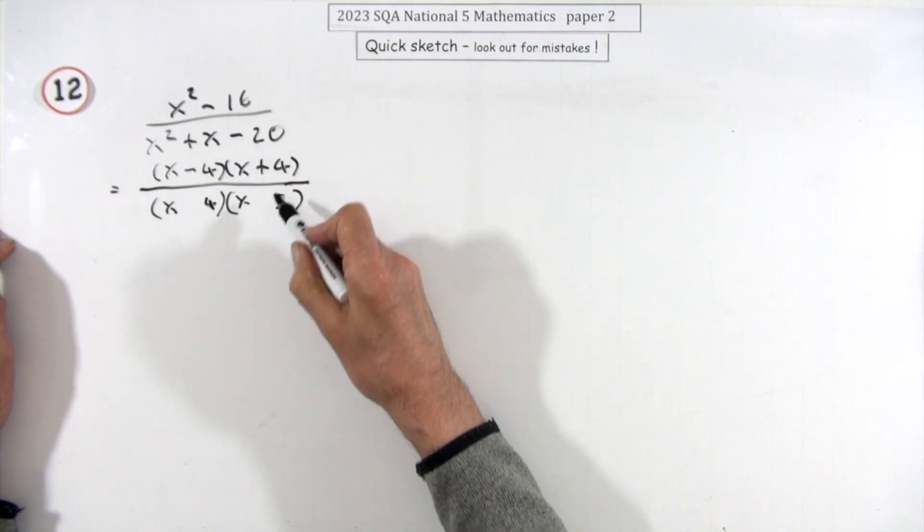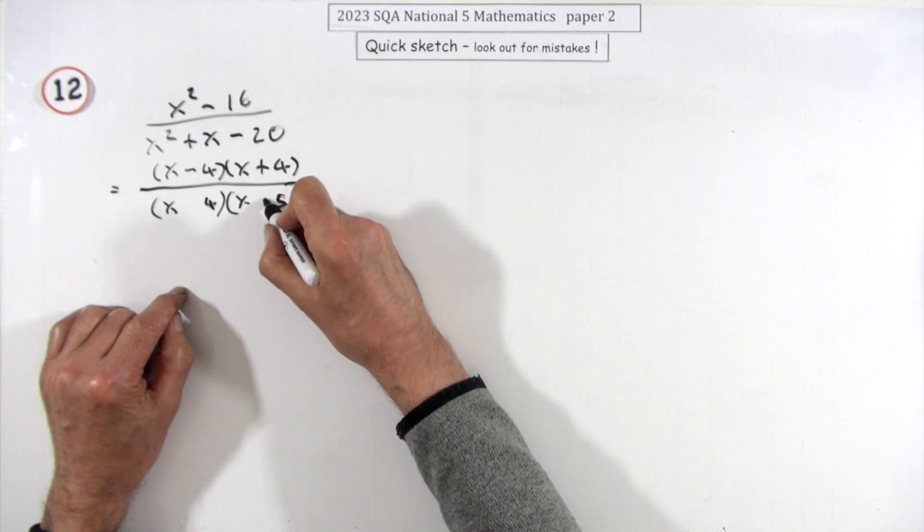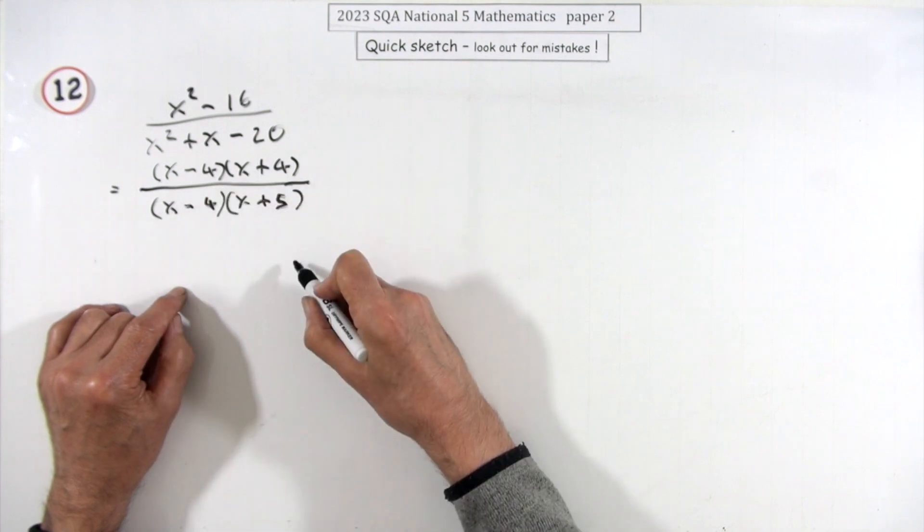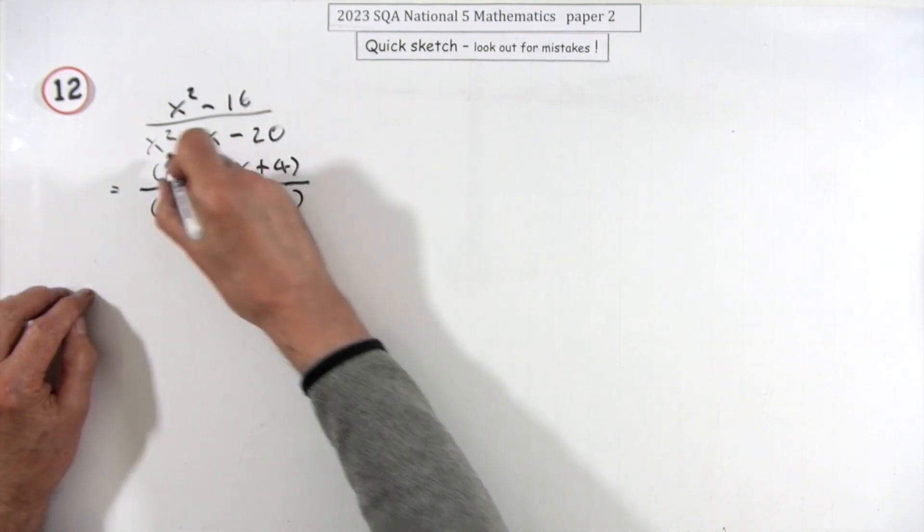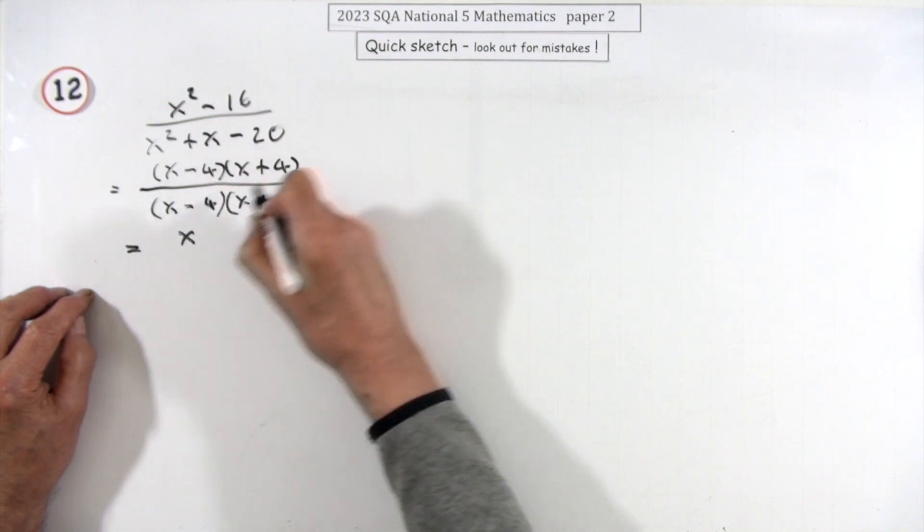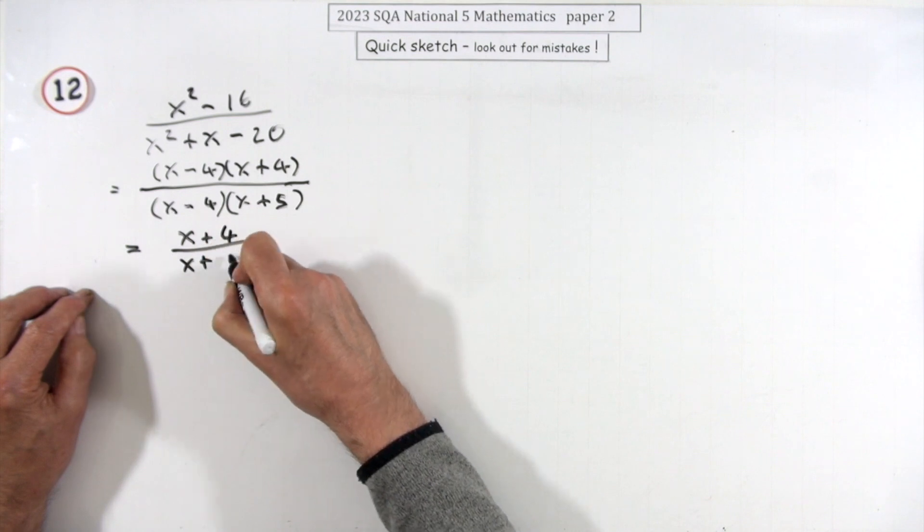4 times 5 is 20, but I want the sum to come to plus in the middle, so I want a plus 5x for the outer product and a minus 4x for the middle product to make this work. Now those two factors can cancel out, leaving just the x plus 4 on its own on the top and the x plus 5.